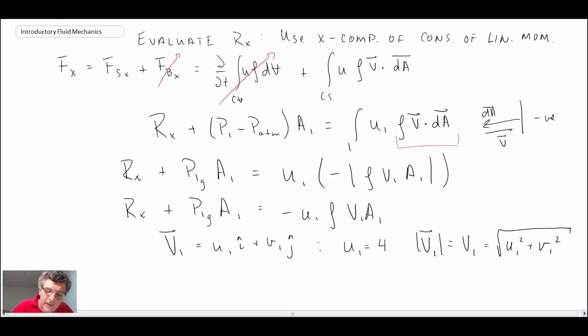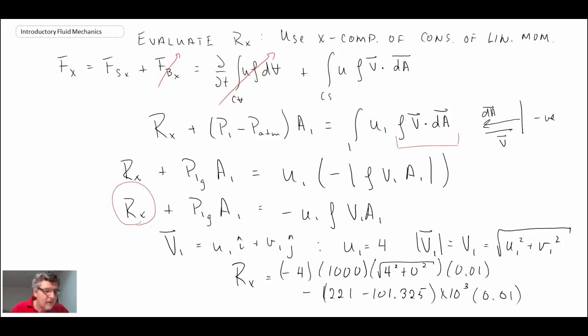So what we end up with, I am going to isolate for Rx. So we get this for Rx. Plugging in the values and calculating, we find Rx is minus 1.36 kilonewtons. Writing it out as a component with magnitude and direction, given that it's minus, that means it is moving in that direction. And that is to hold the elbow.